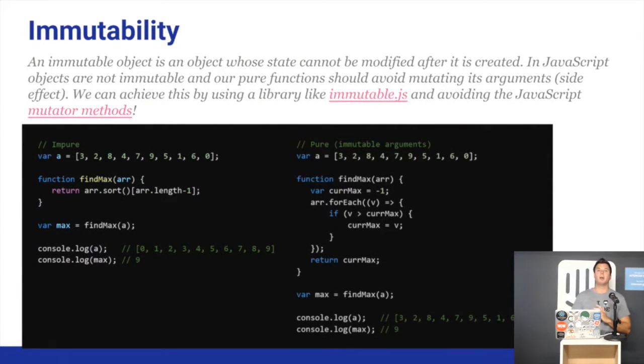This brings us to immutability. In a pure function, we should not mutate the state and we should try to use immutable data structures. To do that, we can use a library like immutable.js. You will be able to find this online later, but this is some methods that in JavaScript, the array object has some methods that will change the array. For example, if you sort an array, it will change the original array.